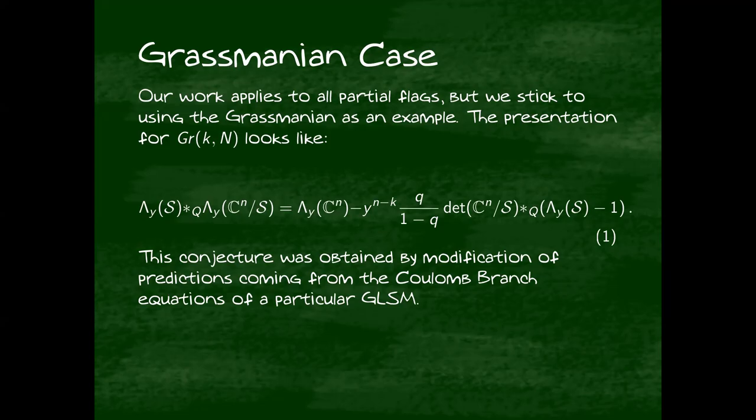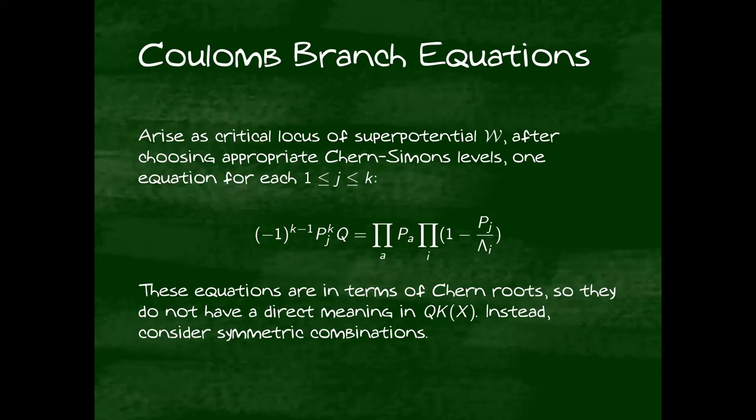Which gives you some equations that are predicted to be something about quantum K-theory, and then modifying them to get a nice geometric presentation, which is what the authors did. The physical idea here comes from the Coulomb branch of a particular gauge linear sigma model. What that means is, to me at least, because I'm not a physicist, they have some super potential w. Then they have some parameter called a Chern-Simons level that they tune specifically to get to quantum K-theory. And then after doing that, the critical locus of the super potential gives you equations that I've written down here in terms of the Chern roots.